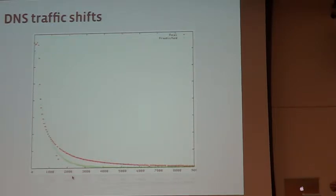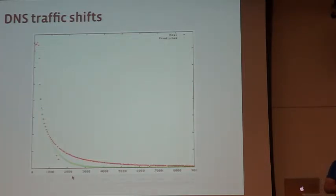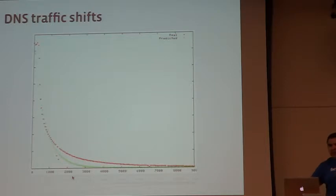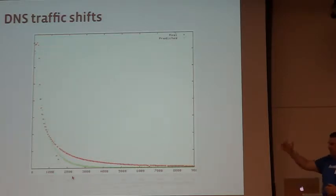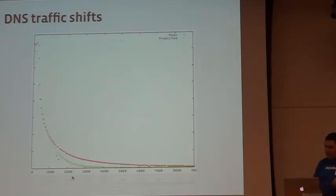We studied this decay curve for several days and built a mathematical model. The red line is real, the green line is predicted. Now Cartographer has this prediction curve built in — when it moves traffic from one POP to another, it waits for 85% of the decay curve to actually happen before making any further adjustment. This solved the oscillation problem. Looking at the graphs today, the traffic curves are much smoother.